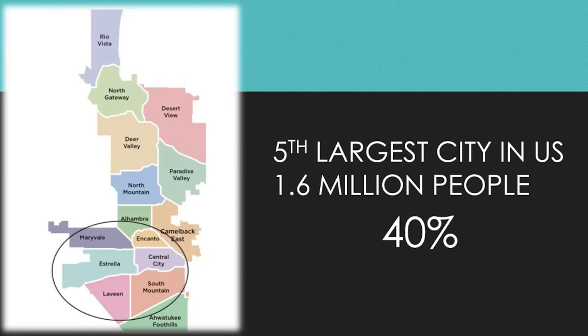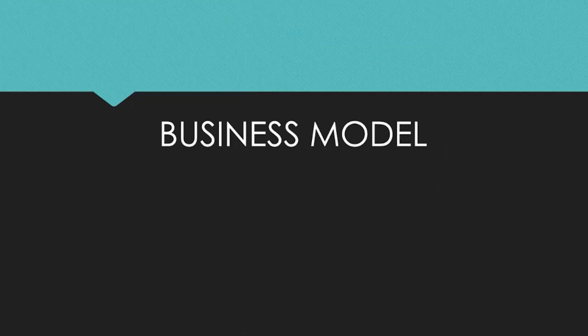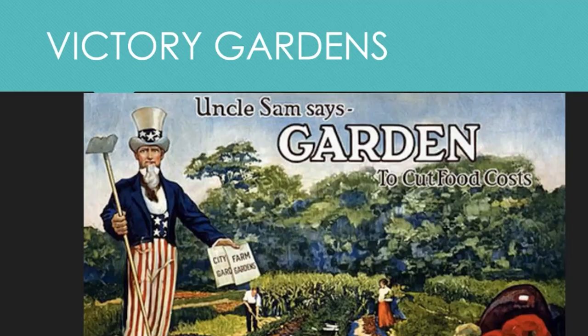I really do commend the city for this. Business model: the business model is critical because if you don't have the right one, you're not going to succeed. When was the last time we had a successful urban farming business model? It turned out to be a long time ago, during World War II — they were called the Victory Gardens. The purpose of Victory Gardens was to provide food for the populace while the big farmers sent food over to the war effort.